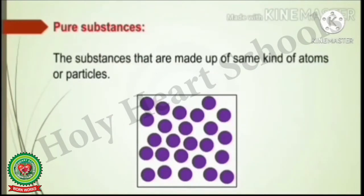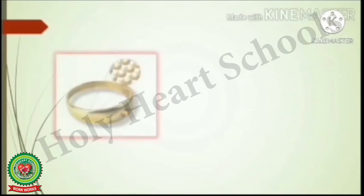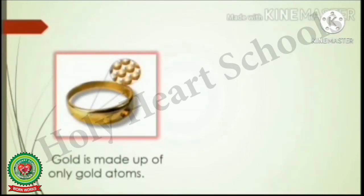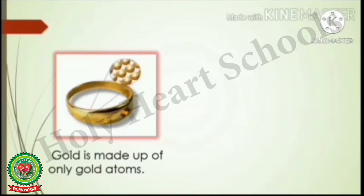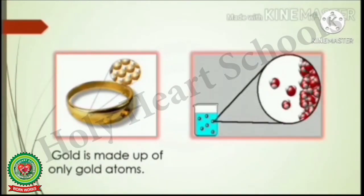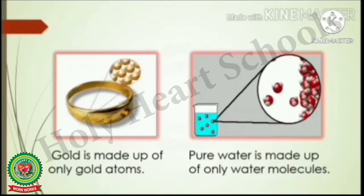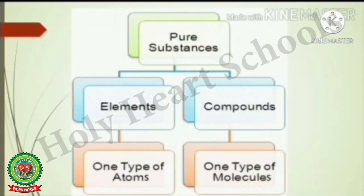Let us discuss what are pure substances. Pure substances are substances that are made up of the same kind of atoms or particles. For example, gold is made up of only gold atoms, so gold is a pure substance. Similarly, pure water is made up of only water molecules, so it is a pure substance. Pure substances can be categorized into elements and compounds. An element is a pure substance made up of only one type of atoms, and a compound is a pure substance made up of only one type of molecules.